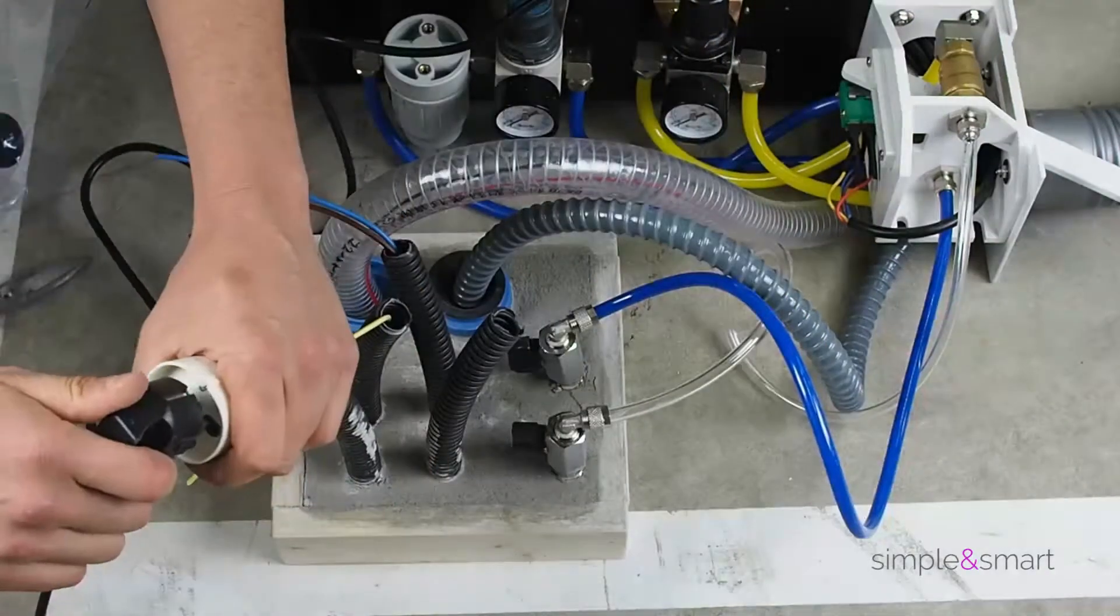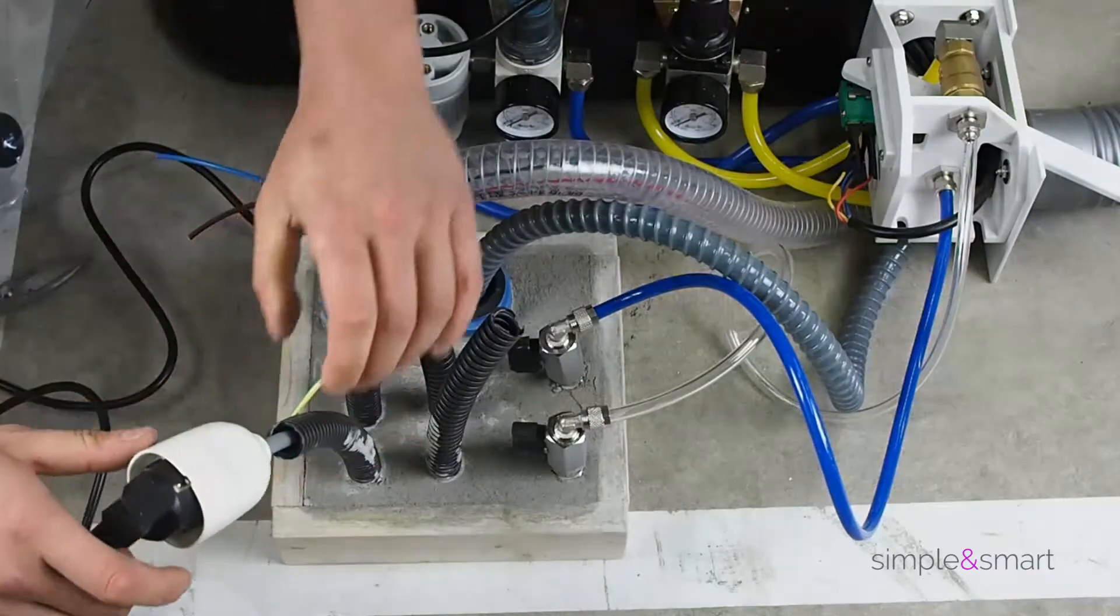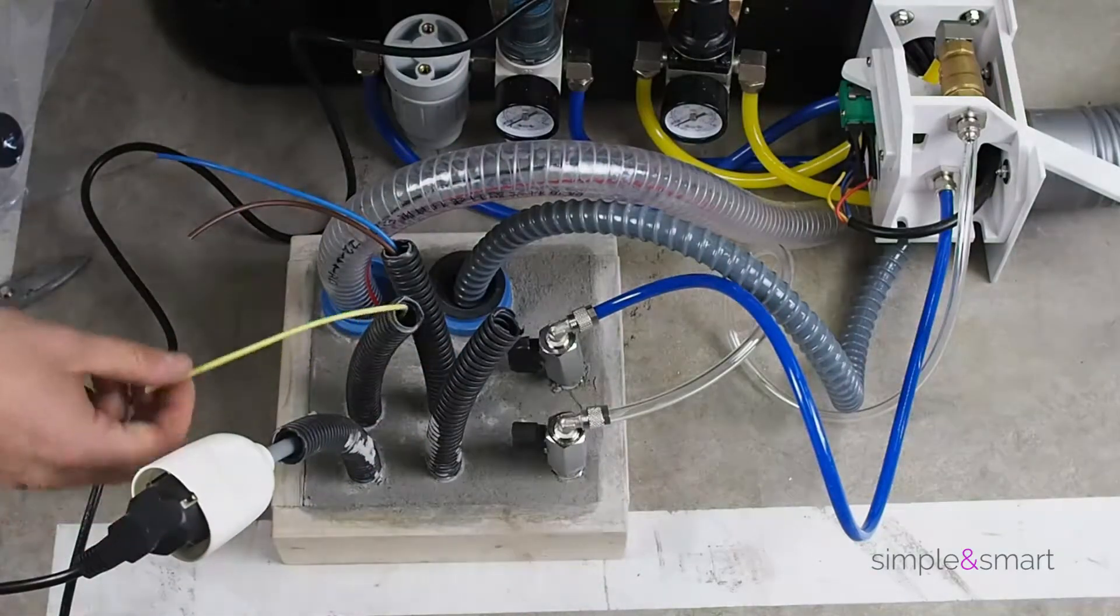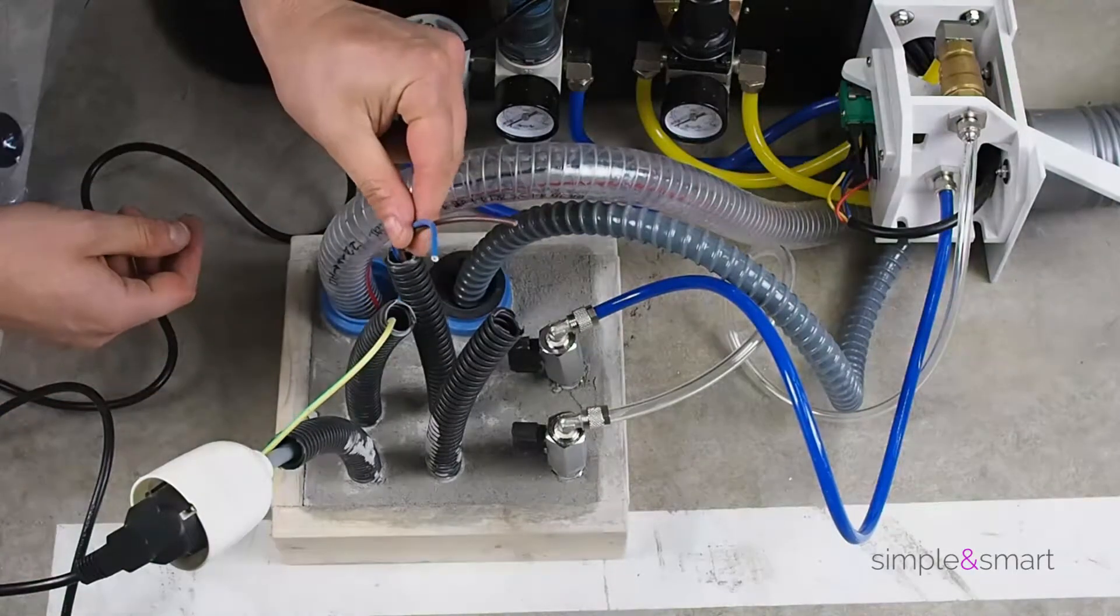Connect the unit to the electricity. Link the ground at the unit metal base and join the suction wires to the connector.